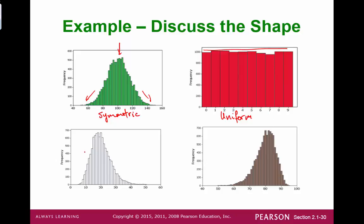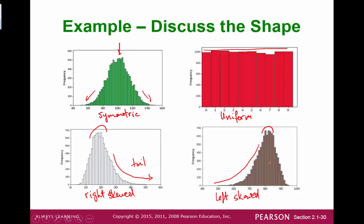Our third example has a peak on the left side and then a tail on the right — we would call this a right skewed graph. The last one has a peak on the right side and the tail is on the left, so this is left skewed or skewed to the left. That's the end of Section 2-3.